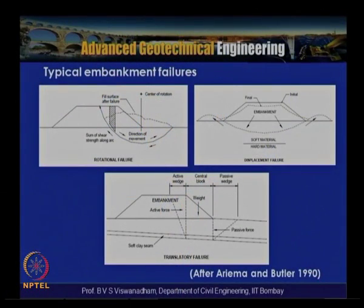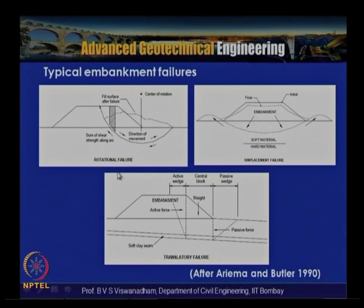Before going into typical slope stabilization techniques, there are two types of slopes: natural slopes and man-made slopes, with embankments falling in the man-made category. A typical embankment failure slide is shown. The first figure shows rotational failure of an embankment, which occurs when the underlying clay is soft — movement is vertical and then outward, also called a base failure. Another typical failure is displacement failure, where the embankment portion settles with maximum settlement at the centre and heaving on both sides.